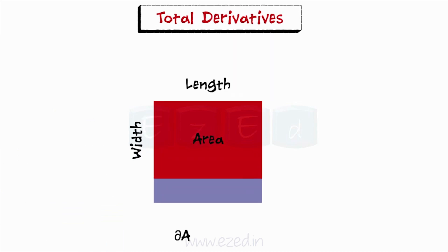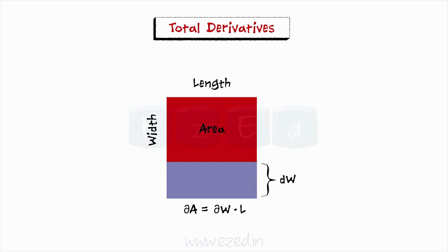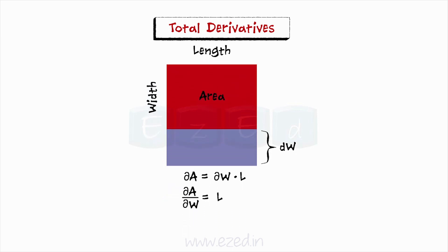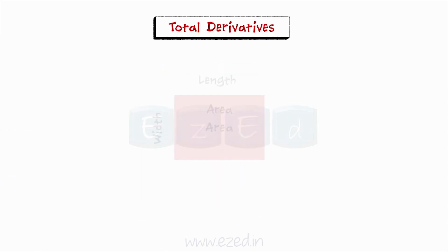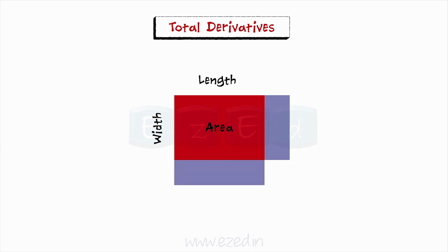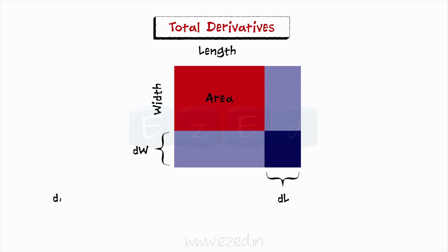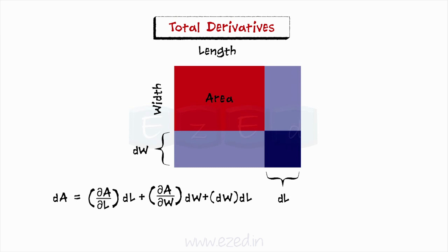If you increase the width, the change in area equals the increase in width times the current length, giving del A by del W equals L — the partial derivative with respect to width. Therefore the increase in area is del A by del W times dW. Combining both effects, an increase in both length and width gives dA equals del A by del L times dL plus del A by del W times dW plus dW times dL. Since derivatives deal with instantaneous slopes and small changes, dW times dL is small and ignored, resulting in dA equals del A by del L times dL plus del A by del W times dW.